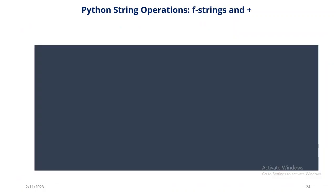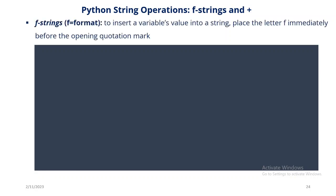Other string operations include string concatenation. Python provides f-strings, where 'f' stands for format, which is used to insert a variable's value into a string. We learn how to do that by putting the letter f immediately before the opening quotation mark. You can also perform string concatenation using the plus operator, which is similar to Java. Concatenation means joining one string and another string — or several strings — together.